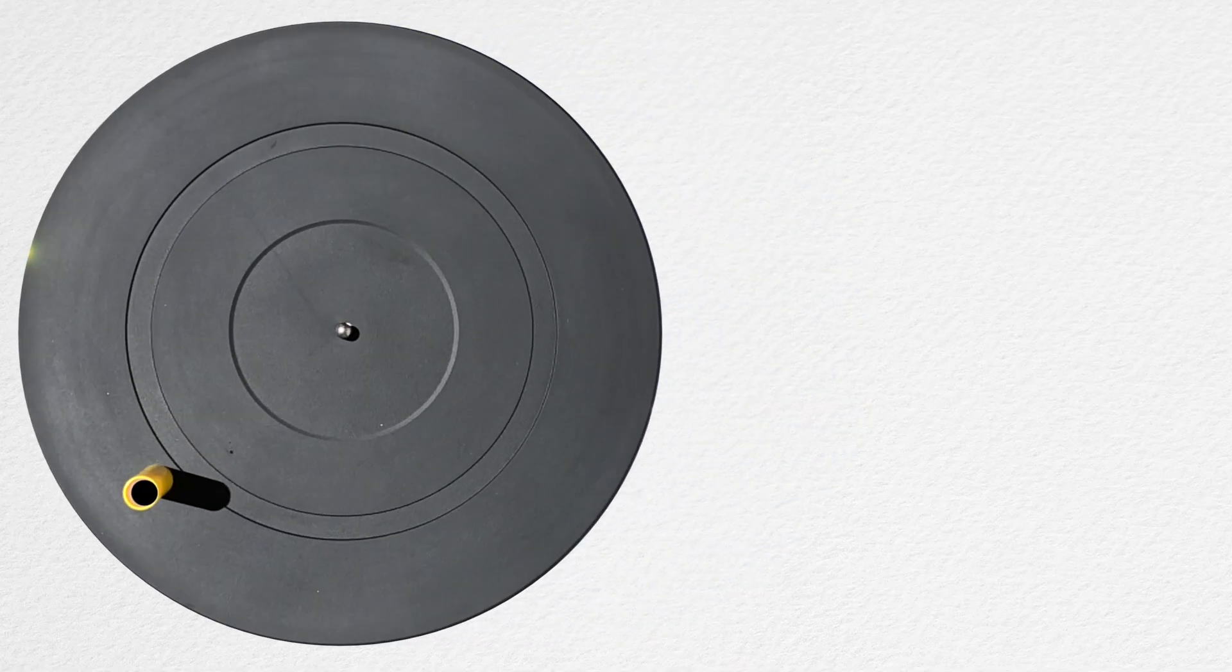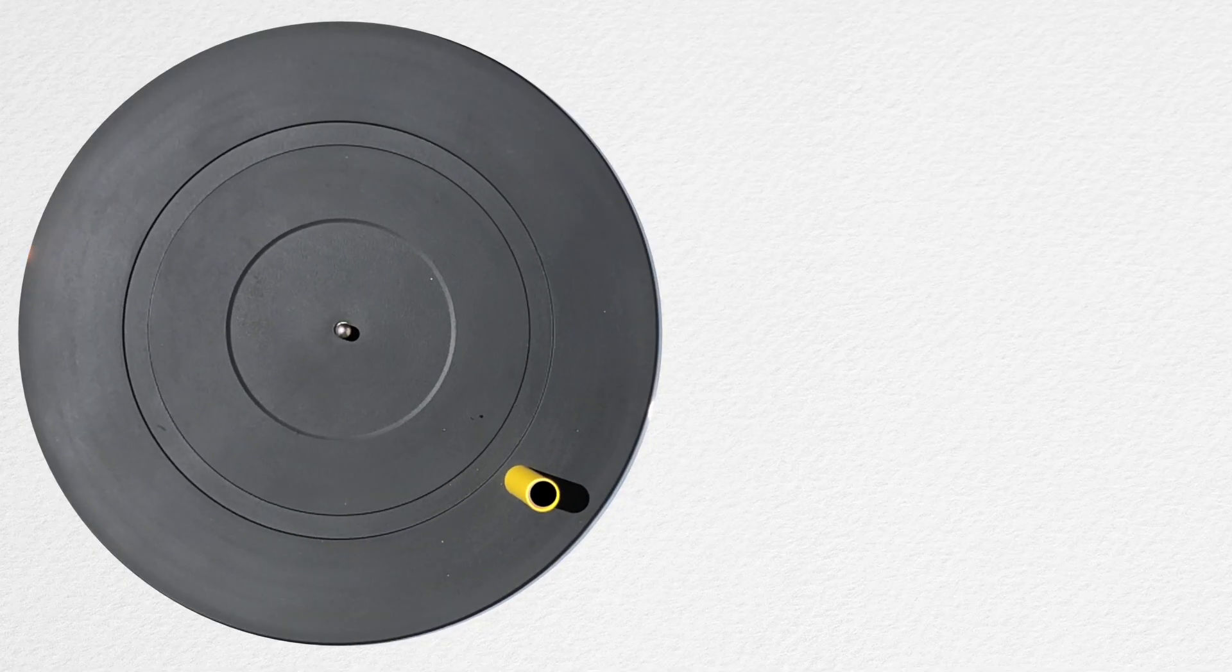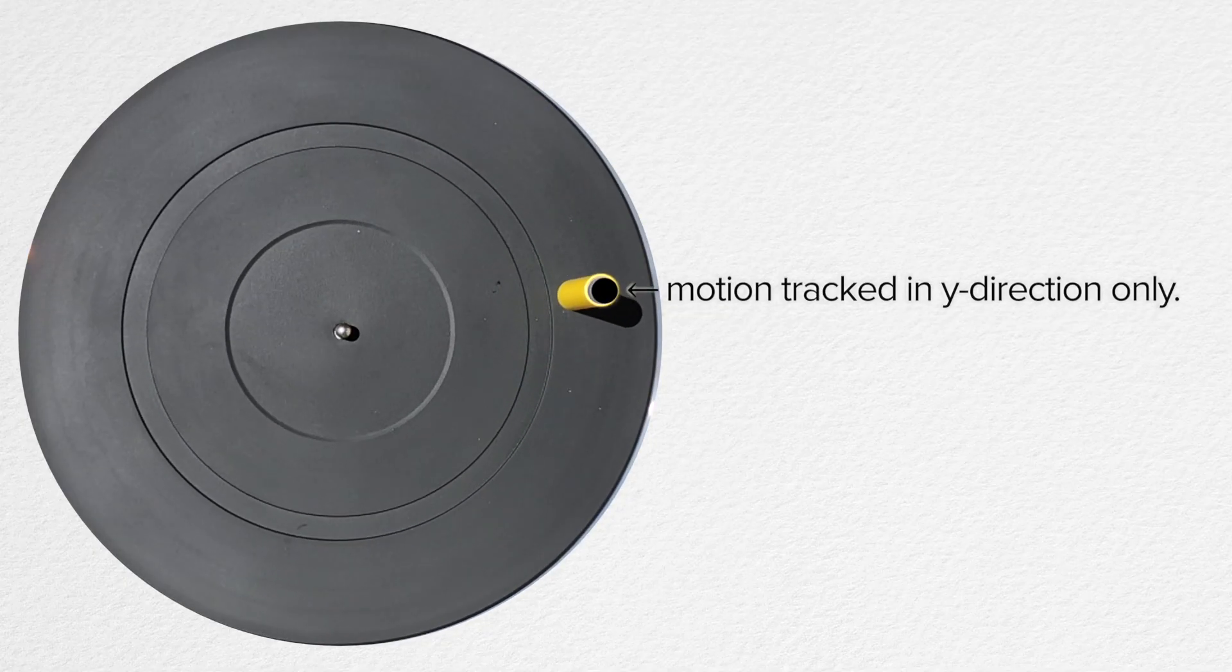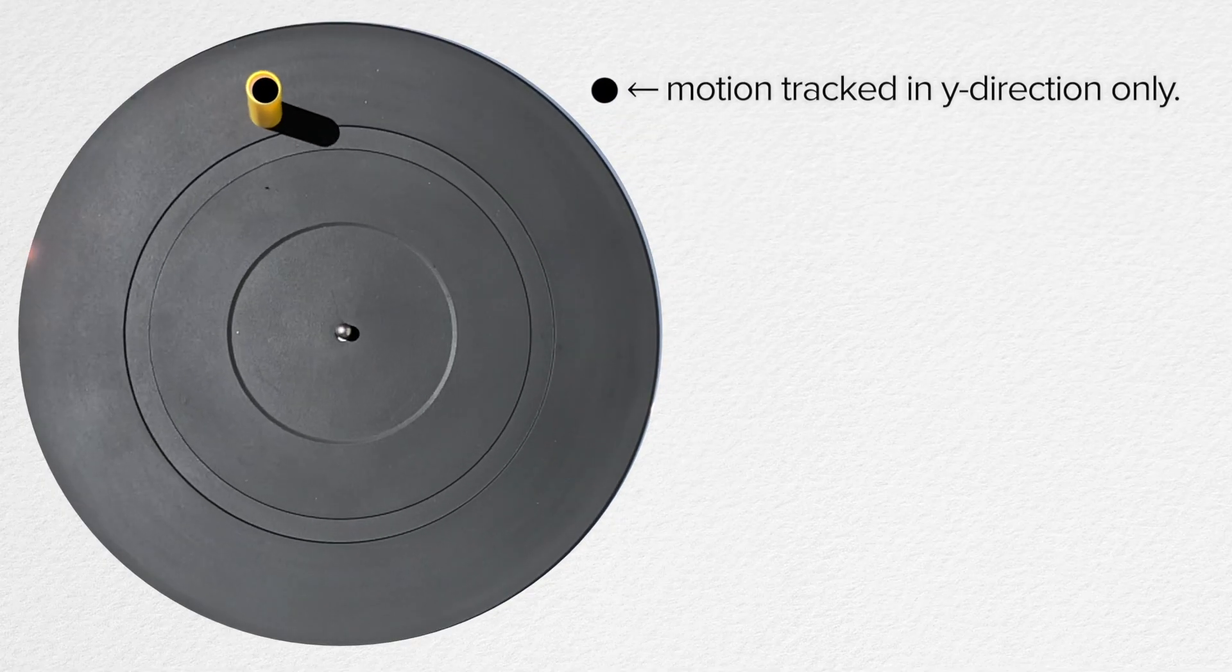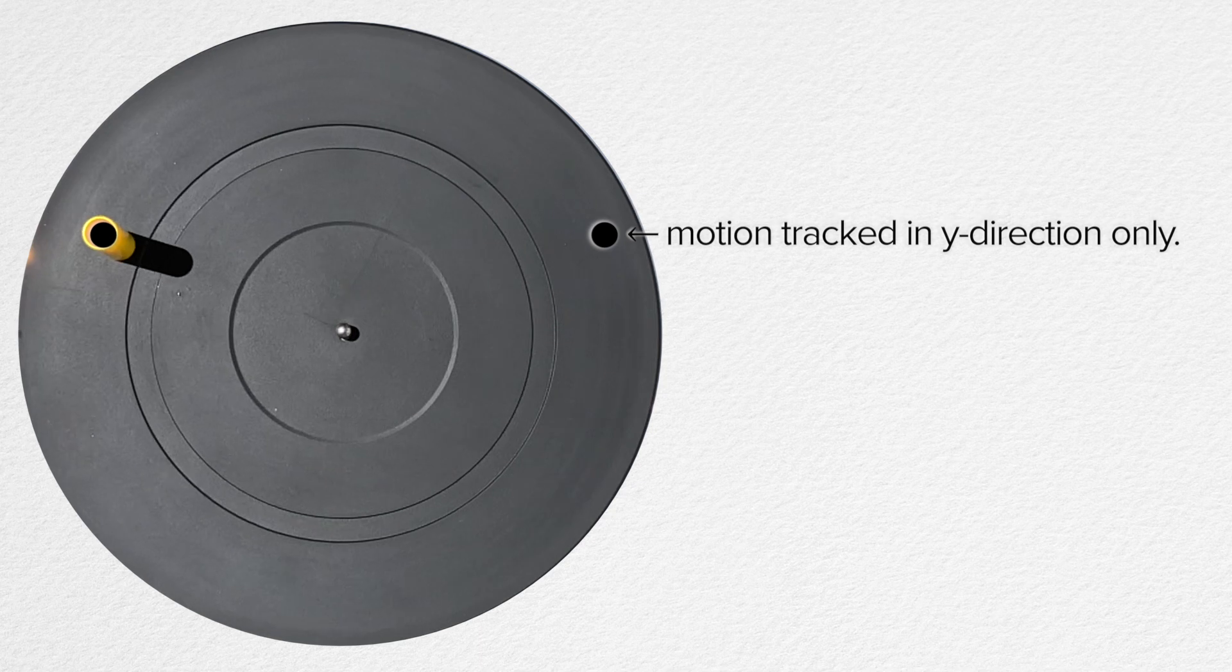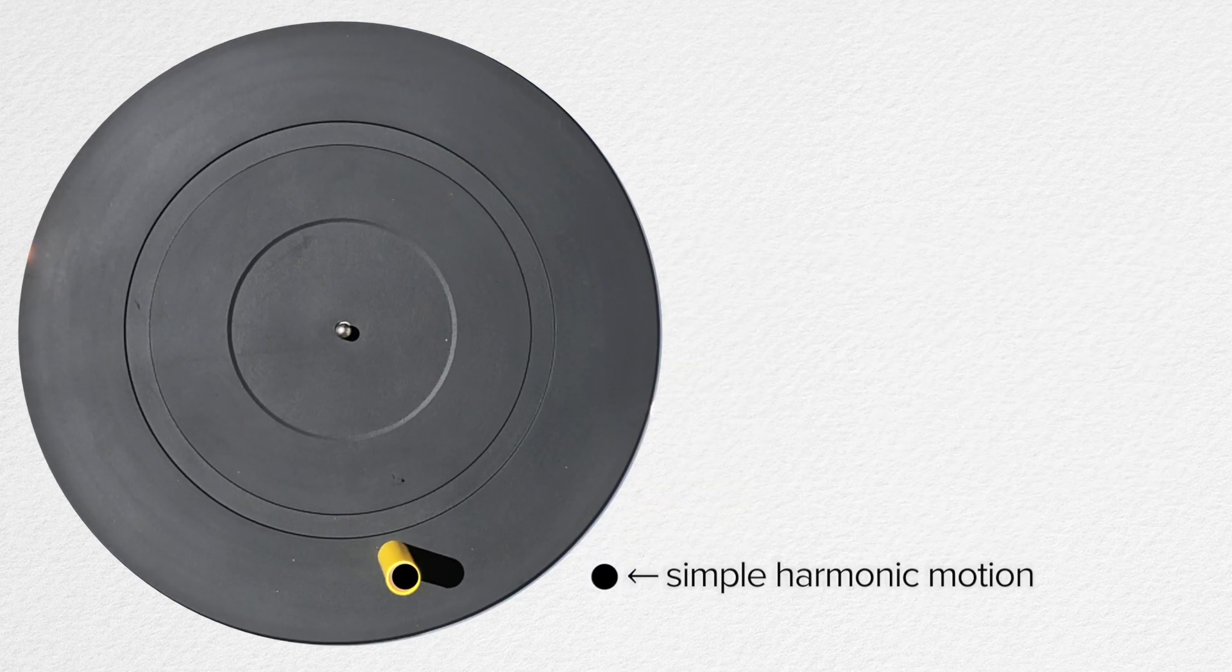Now I will add a dot that is motion tracked to the top of the cap. And I will isolate the motion of the dot so it is only moving in the y direction. This dot is now moving just like the side view of the cap. In other words, this dot is moving in simple harmonic motion.